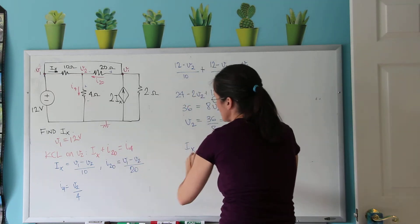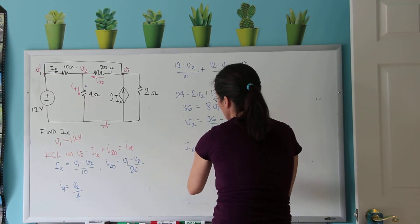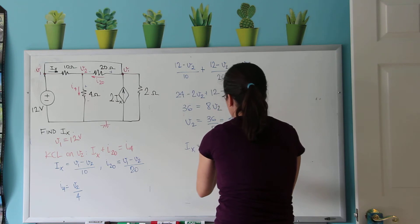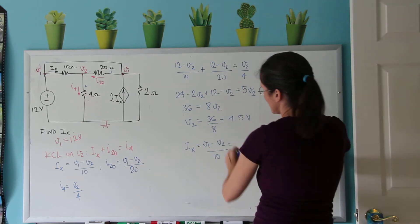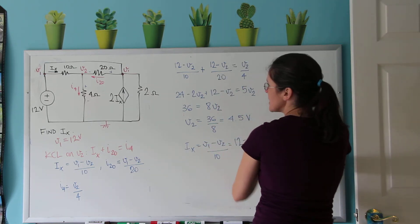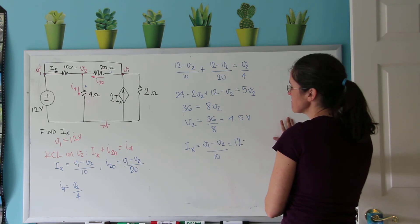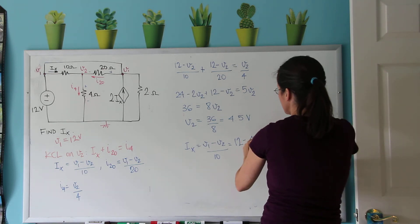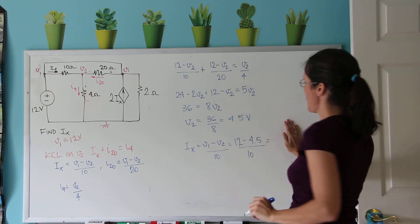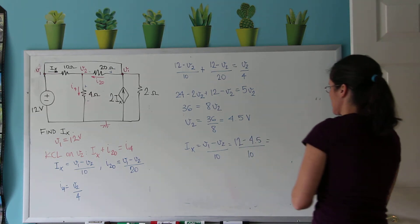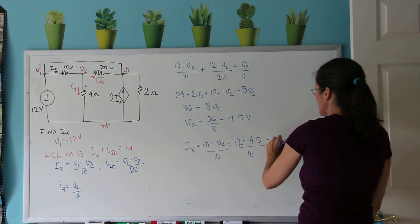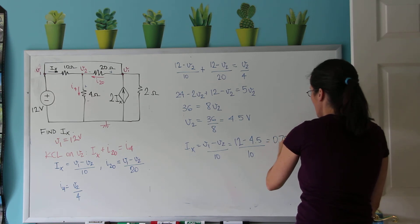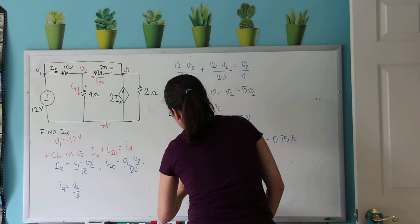And now all that's left is Ix, which equals V1 minus V2 by 10, which is 12 minus 4.5 over 10. This is 7.5, so Ix equals 0.75A.